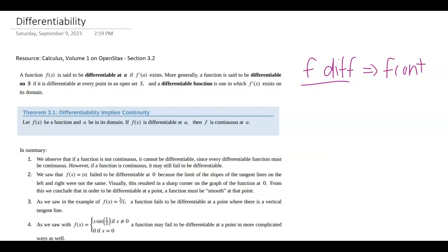So for example, when the limit doesn't exist because you have maybe like a jump at that x value, let's say a, f prime of a does not exist.